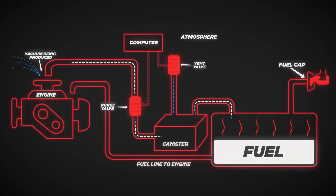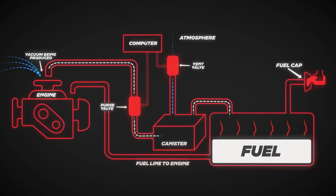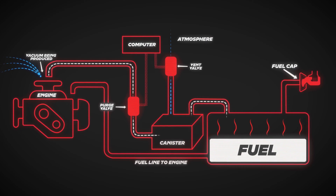The EVAP system is responsible for capturing all the fumes within the fuel system. The whole point of the EVAP system is to allow all the fumes to get processed and not be released into the atmosphere, as releasing them would cause damage to our environment. After 1996, EVAP systems have become much more complicated and much more regulated to ensure they function properly.